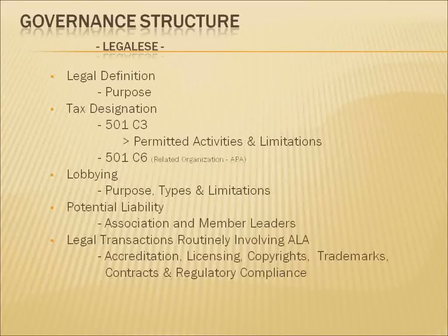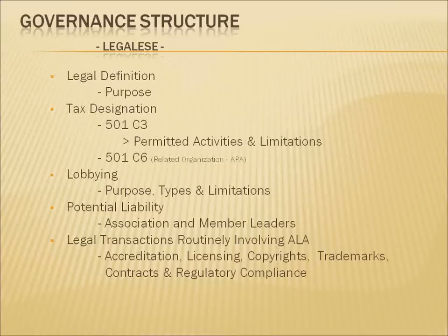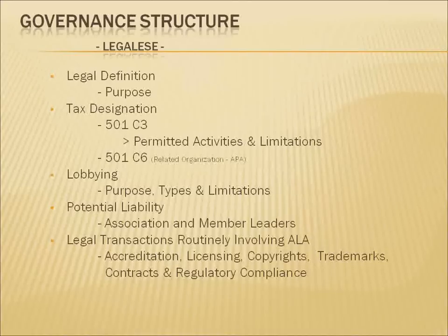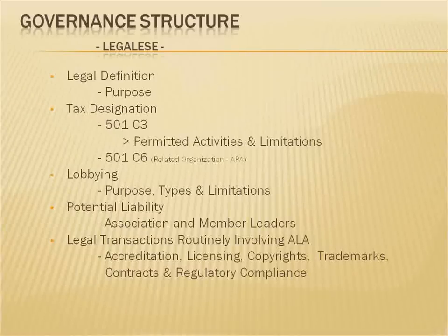A lot of our work in terms of influencing the legislative and legal process is carried out by the ALA Washington office. Lobbying intersects with our tax status in a very important way. We have the ability to educate legislators and people who work in the political process, but there are limitations in terms of our participation in that process. It's also important to understand that our 501c3 status opens up certain potential liabilities for those of us who work and participate in the business of the association. The association does provide liability insurance, but we need to be cautious in terms of what we do, what we say, and where we say it.